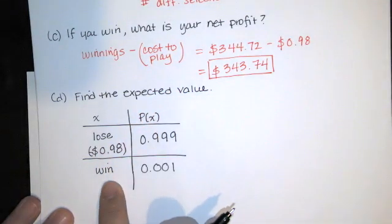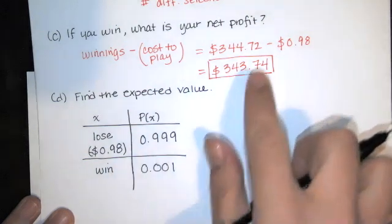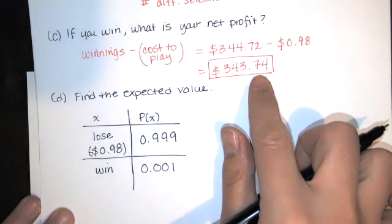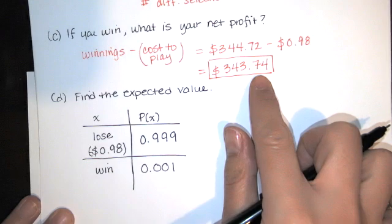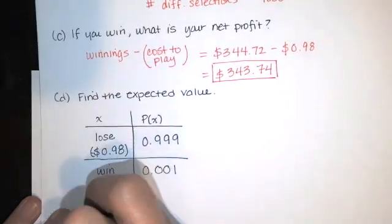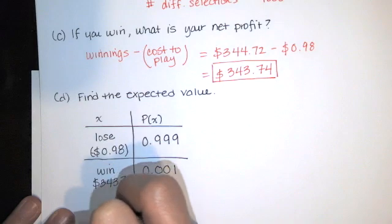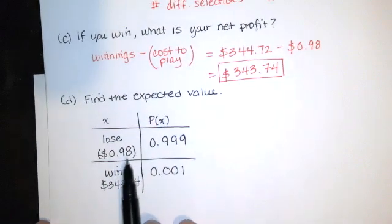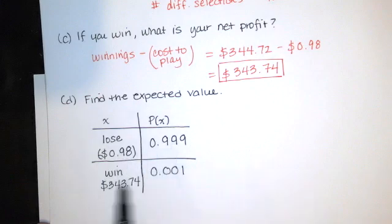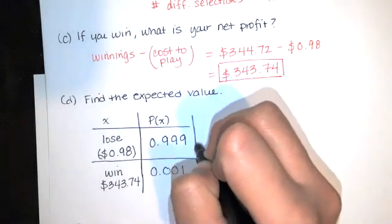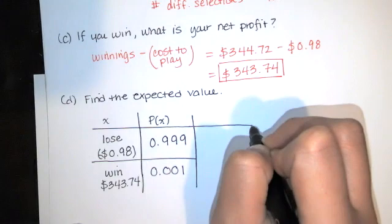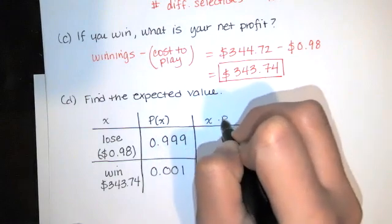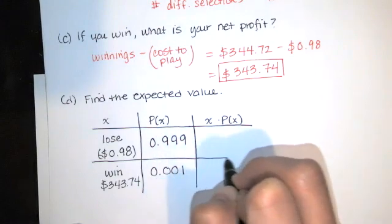Now, if you win, the net profit is going to be $343.74. So these are our variables. And then we just take those and multiply by the corresponding probabilities and then add them together to find the expected value, which is the same as the mean.